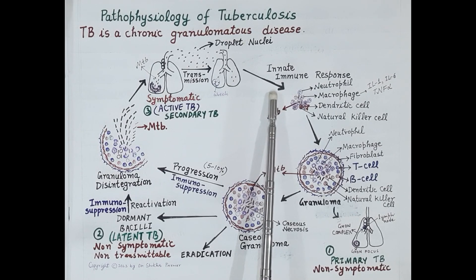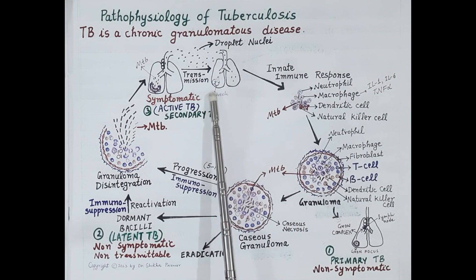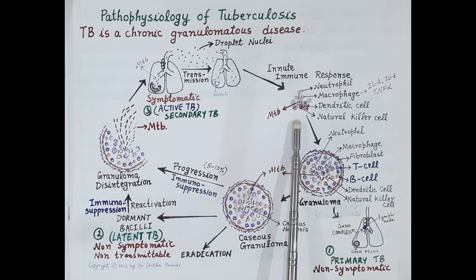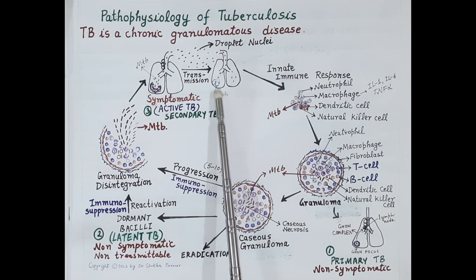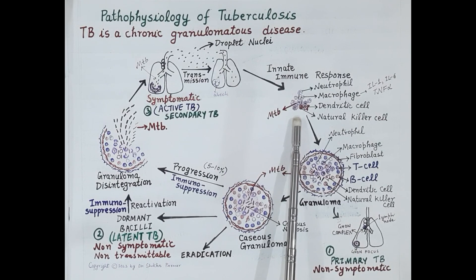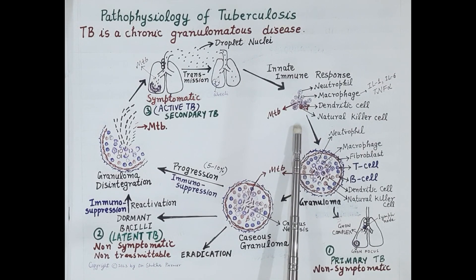When the bacilli reach the alveoli, this causes activation of innate immunity. Because of this activation, macrophages — the first line of defense — reach the alveoli and engulf the bacteria. Along with macrophages, other immune cells like neutrophils, dendritic cells, and natural killer cells also reach the site of infection.